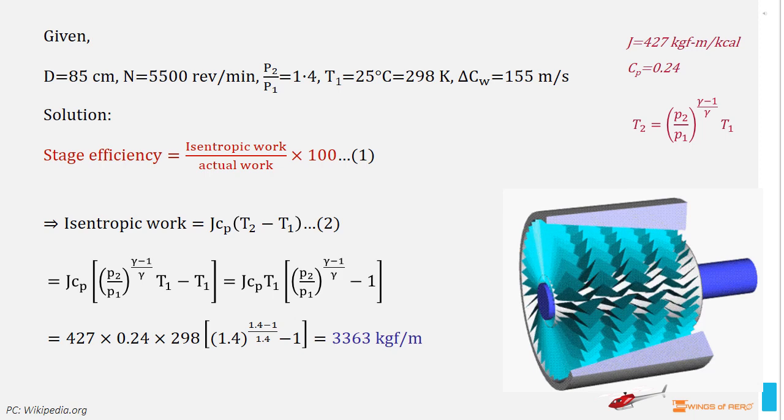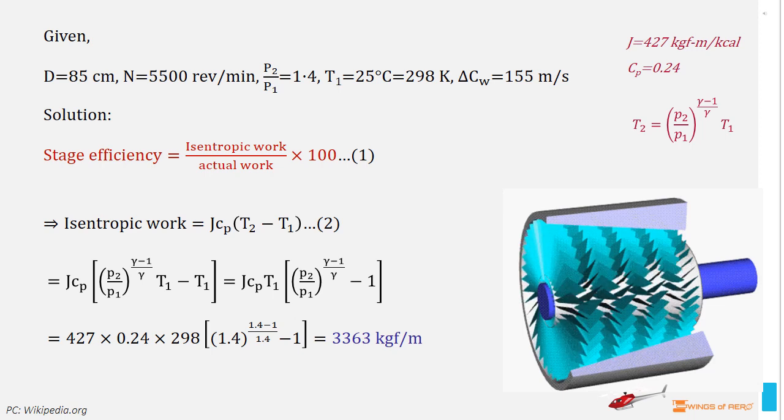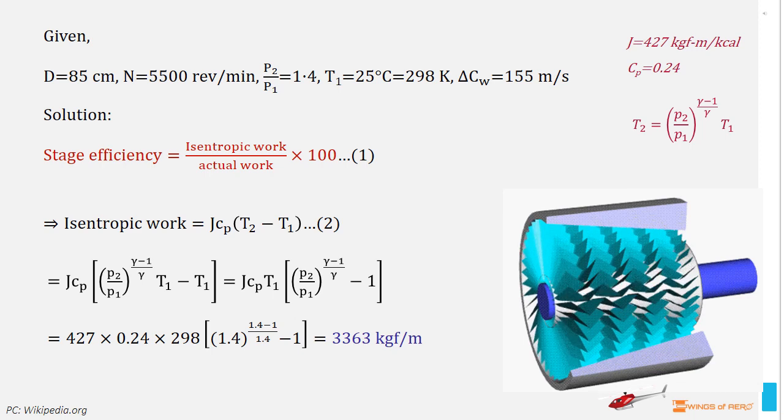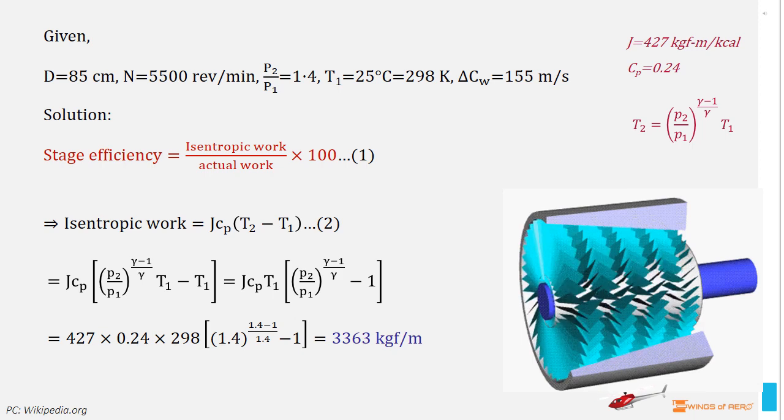So, from isentropic work, we know that T2 is equal to T1 into P2 divided by P1 to the power gamma minus 1 divided by gamma. Substitute this relation in equation number 2. Then we can write, isentropic work is equal to J into C suffix P into T1 into P2 divided by P1 to the power gamma minus 1 divided by gamma minus 1. Now solve this equation with suitable values and we get isentropic work 3,363 kilogram force per meter.